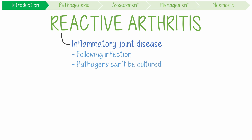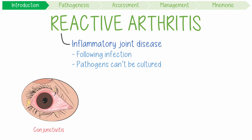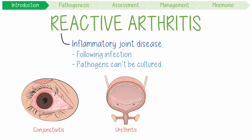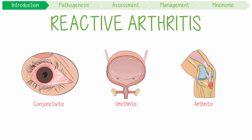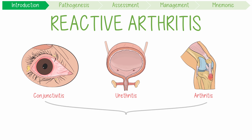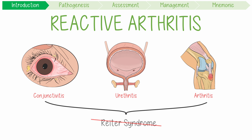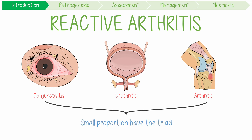Historically, it was associated with the triad of conjunctivitis, urethritis, and arthritis. Together, this triad of symptoms was previously described as Reiter's syndrome. However, it's important to acknowledge that we've moved away from this eponymous term. A still somewhat helpful phrase — can't see, can't pee, can't climb a tree — can help you remember this triad, but keep in mind that it only occurs in a small proportion of patients with reactive arthritis anyway.